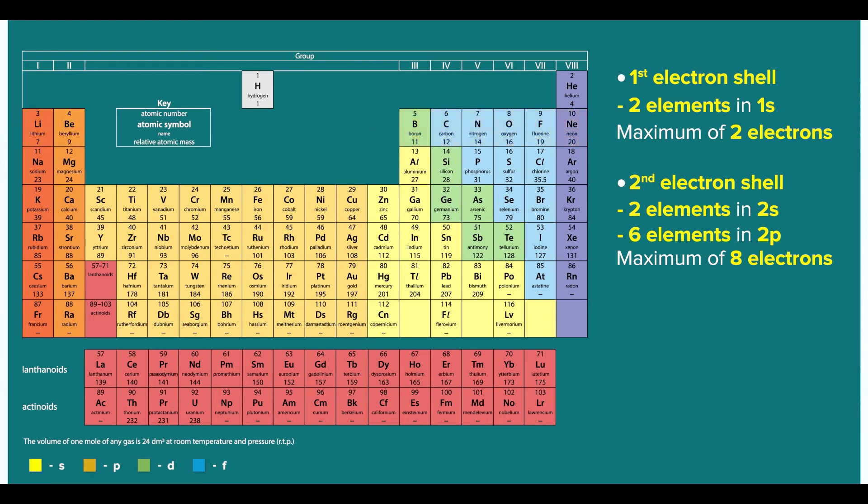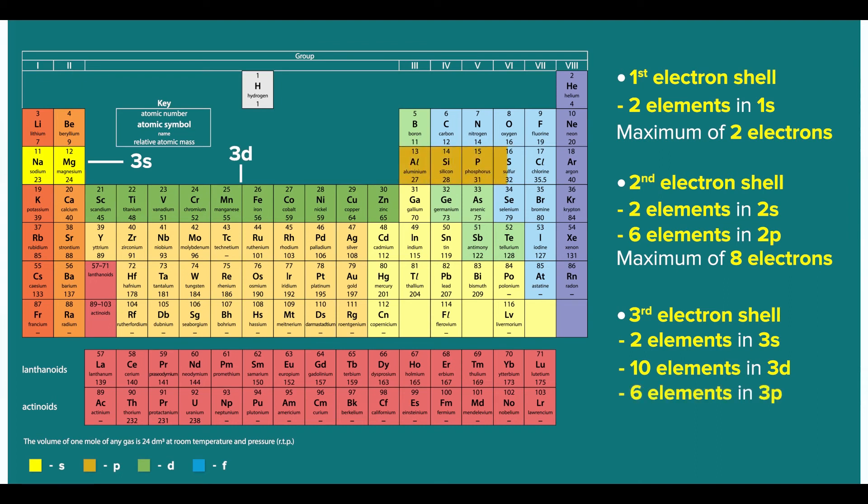And for the third electron shell, since there are 2 elements with the 3s label, 10 elements with the 3d label, and 6 elements with the 3p label, this means that there can be a maximum of 18 electrons in the third electron shell. Very good!